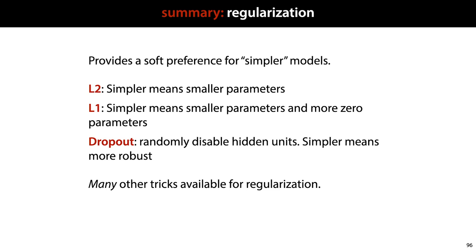So to summarize, regularization is yet another way to provide a preference for simpler models. L2 defines simpler as those models with smaller parameters. L1 defines simpler as those models with smaller parameters and more parameters that are equal to zero. And dropout randomly disables hidden units. Simpler models are those models that are more robust to those kinds of perturbations. These are just three regularizers, and many other tricks are available if you notice that your network is overfitting.